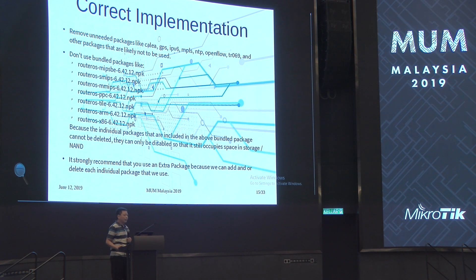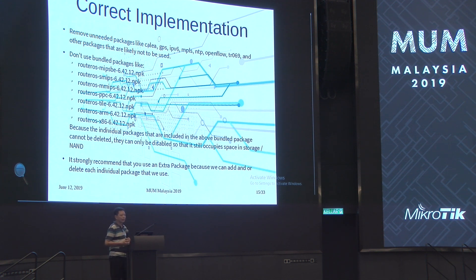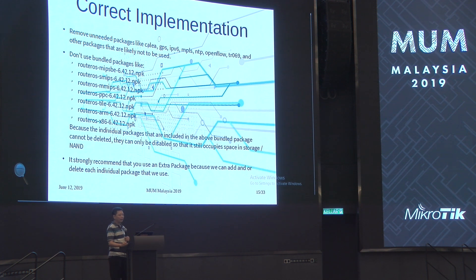Correct implementation: remove unneeded packages like Calea, GPS, IPv6, MPLS, NTP, OpenFlow, TR-069, and other packages likely not to be used. Don't use the bundle package, because the individual packages included in a bundle package cannot be deleted — they can only be disabled — so they still occupy space in flash storage.